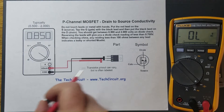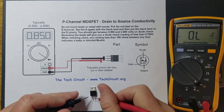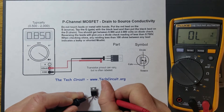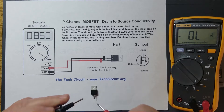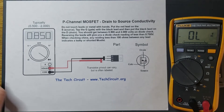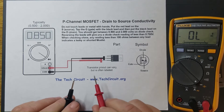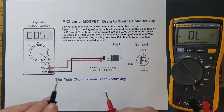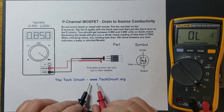Now, if the MOSFET was bad, you would probably end up getting something like this. From the gate to the drain, you'd probably get something like this — a dead short. That's one of the ways that they fail: they catastrophically fail in that manner and you'll just get a dead short. But in order to test the proper functionality of the MOSFET, one must follow the procedure we just outlined.